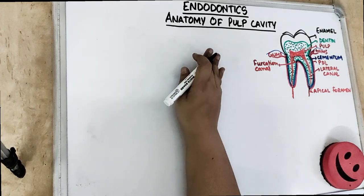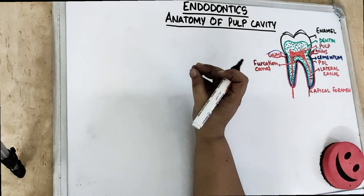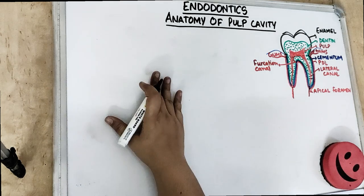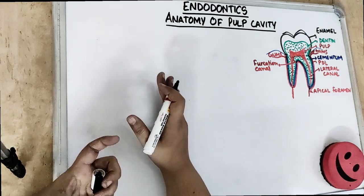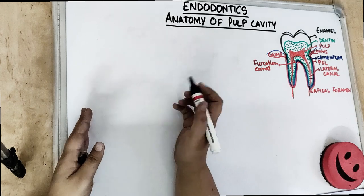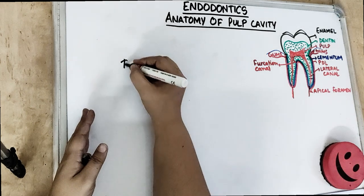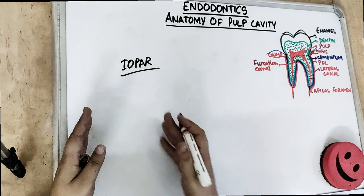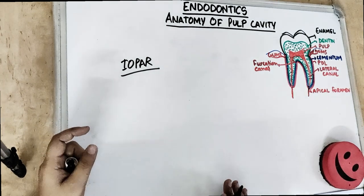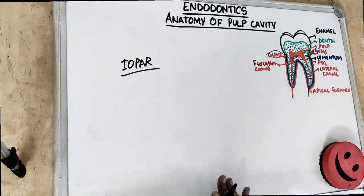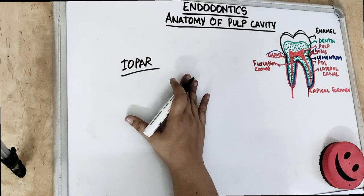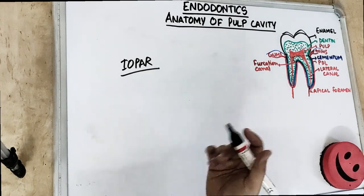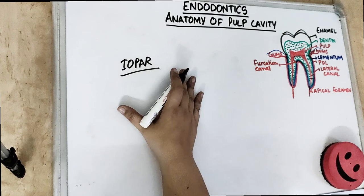Continuing with the internal anatomy of the pulp cavity — a cone beam CT scan can exactly tell you the number of root canals in a specific tooth. But if you take an IOPR, it doesn't tell you exactly the course of the canals or how many root canals are present in a particular root. We cannot always go for a CT scan because it is a bit expensive.